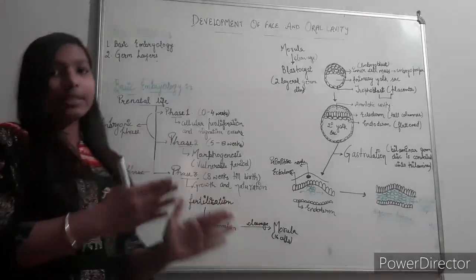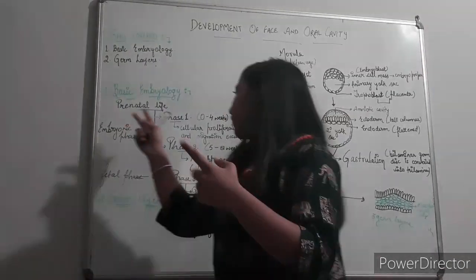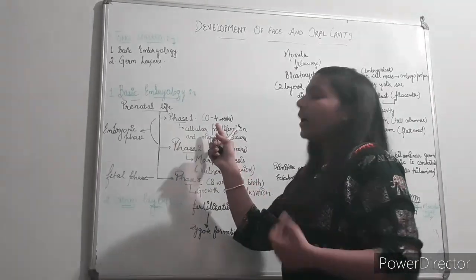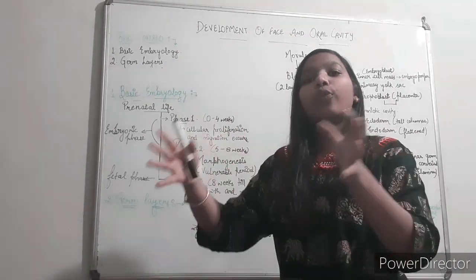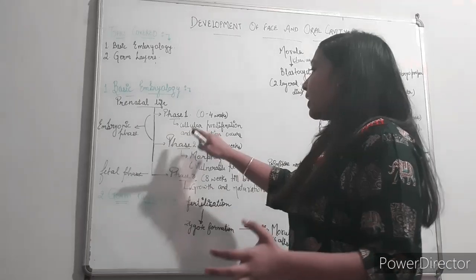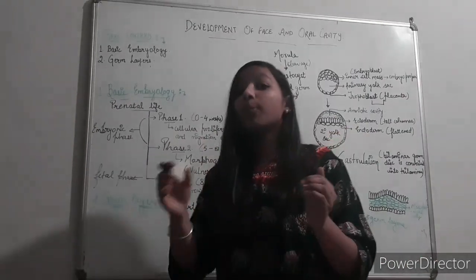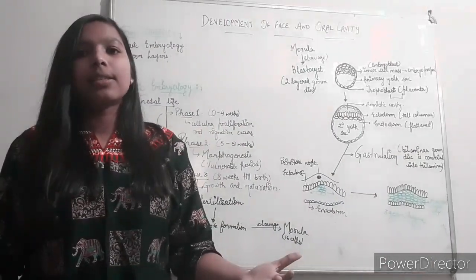In embryonic phase there are two phases. Phase one is from zero to four weeks. It includes cellular proliferation and migration. Cellular proliferation means increase in amount of cells, and these cells migrate from one place to another.